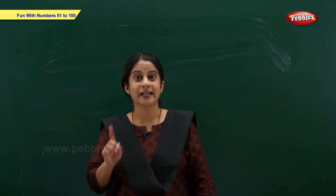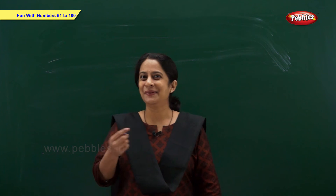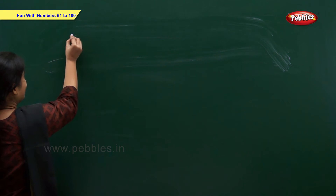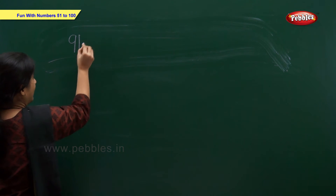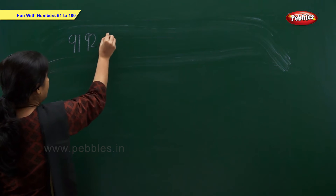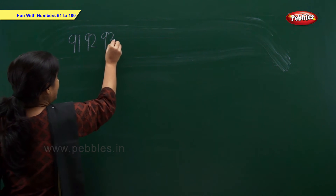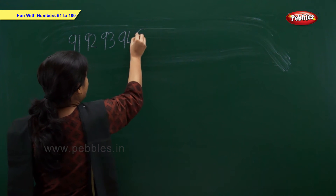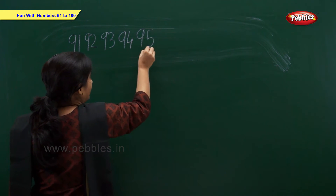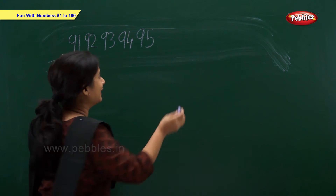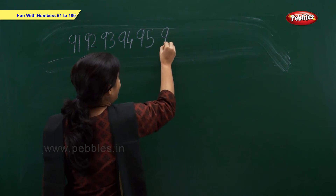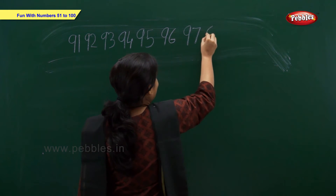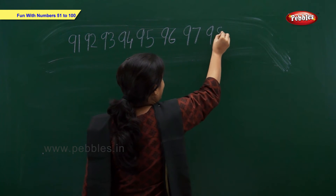Now, let us write numbers from 91 to 100. 91, 92, 93, 94, 95, 96, 97, 98.